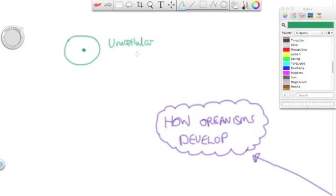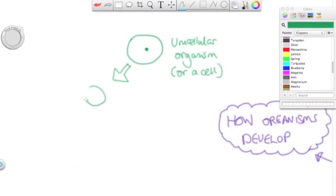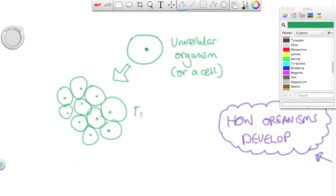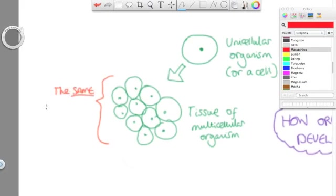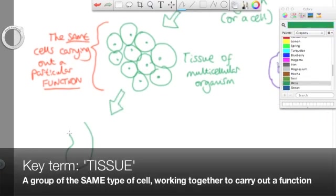So here is either a unicellular organism or we could call it a single cell from a multicellular organism. And if I draw a number of these cells, essentially if they're the same cell, then we can call this a tissue. So a tissue is a group of the same cells working together. You can't use the word similar cells because they must be the same cell for it to be a tissue and they perform a certain function.